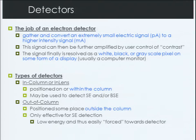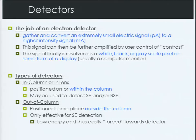There are different types of detectors, and they're given different names depending upon their location. In-column or in-lens detectors are actually located within the column, and they may be used to detect either secondary or backscattered electrons. Another type, an out-of-column detector, is positioned someplace outside the column and is actually only effective for secondary electron detection. The reason is these electrons have lower energies and are more easily pulled towards the detector that's off to the side. Backscattered electrons have such high energies that they travel in a straight line, wherever they're ejected from the sample interaction.